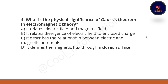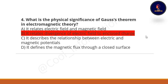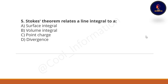Fourth question: what is the physical significance of Gauss's theorem in electromagnetic theory? Option A: it relates electric field and magnetic field. Option B: it relates divergence of electric field to enclosed charge. Option C: it describes the relationship between electric and magnetic potentials. Option D: it defines the magnetic flux through a closed surface. The correct option is B — it relates divergence of electric field to enclosed charge.